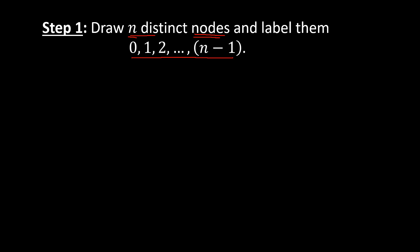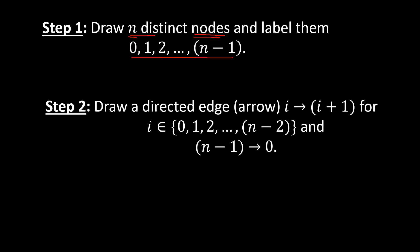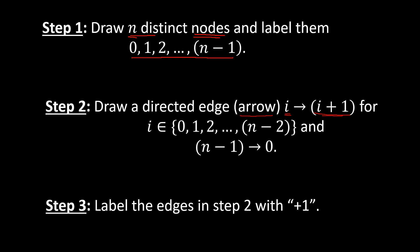The next step is to draw a directed edge, or arrow, from node i to node i plus 1, where i ranges from 0 to n minus 2, and then another arrow from n minus 1 back to 0. So you put arrows from 0 to 1, 1 to 2, 2 to 3, and so on, forming a complete cycle. The third step is to label those edges with plus 1.